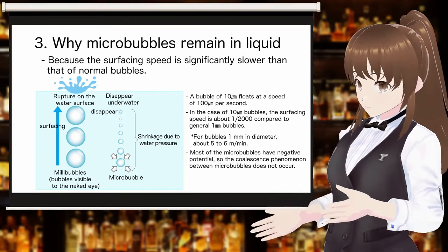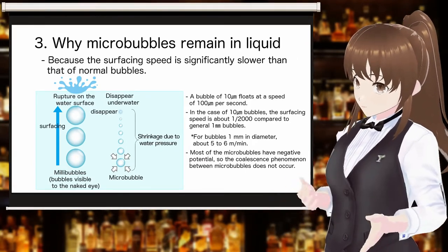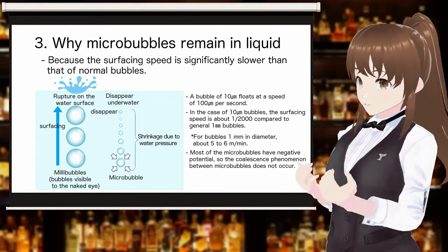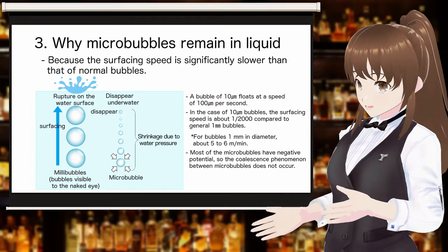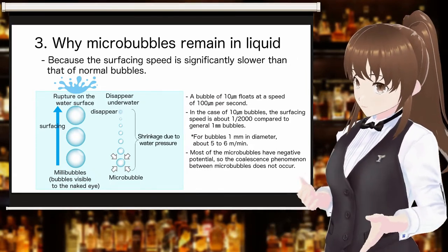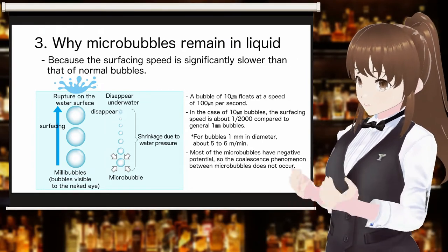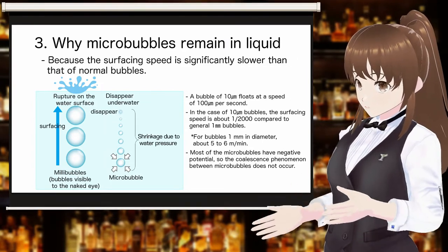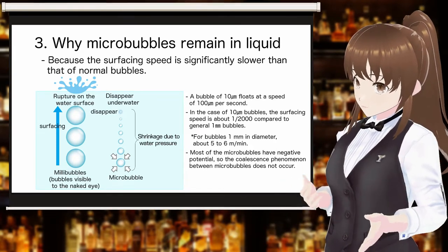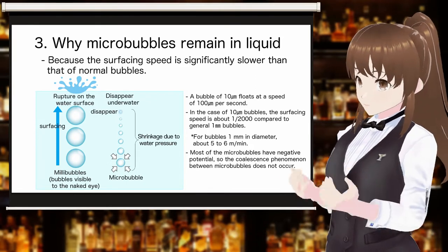Why can microbubbles stay in the liquid in the glass for a long time? This is because the speed at which bubbles rise to the surface is significantly slower — about 1/2000th of that of millibubbles, which are bubbles visible to the naked eye. In addition, most microbubbles have negative potential, so microbubbles do not merge with each other. Therefore, the bubbles do not become larger and do not increase the speed of surfacing.